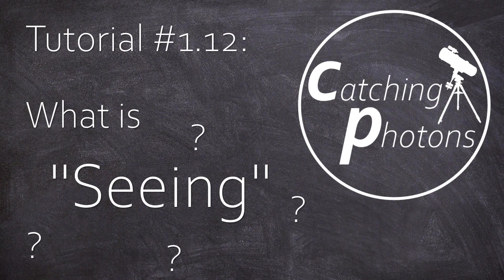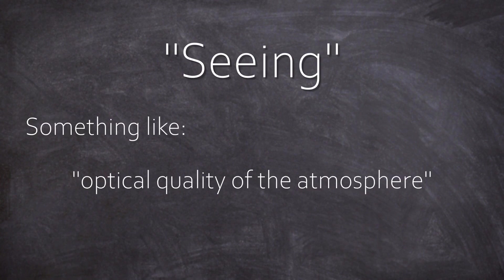Hey it's Chris, welcome back once again to another astro tutorial video here on Catching Photons. Today's video is about seeing. Seeing is a technical term within the astro community. It refers to the general observation quality regarding the optical quality of the atmosphere.